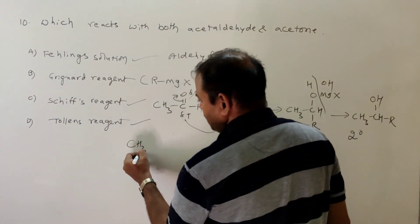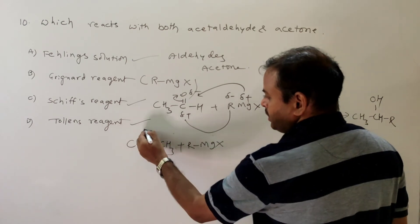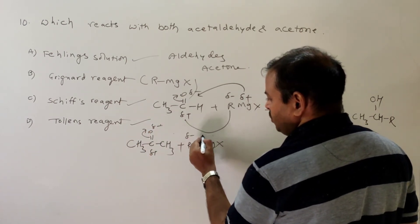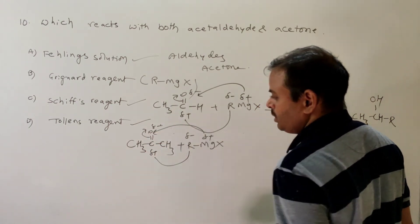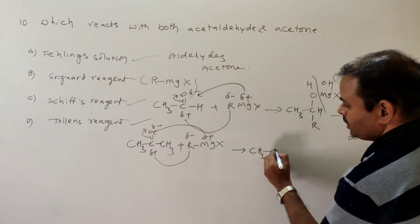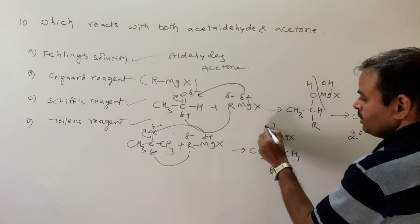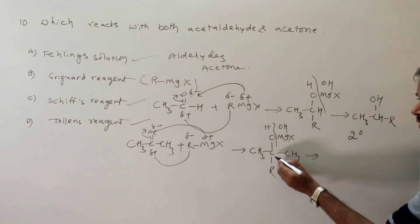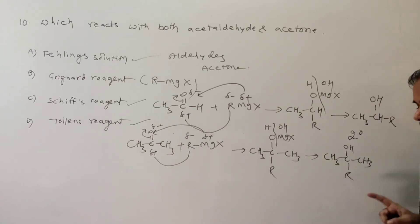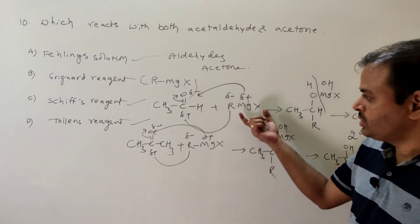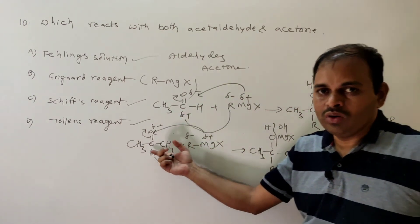With acetone (CH3COCH3) + RMgX: similarly, R− attacks the carbonyl carbon, giving CH3C(R)(CH3)OMgX, which on hydrolysis gives CH3C(R)(CH3)OH — a tertiary alcohol. So with the same Grignard reagent, acetaldehyde gives a secondary alcohol and acetone gives a tertiary alcohol. The answer is Grignard reagent.